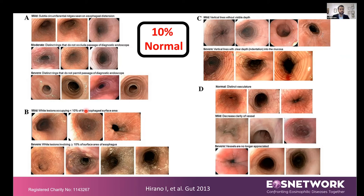The second set of changes we see in people with eosinophilic esophagitis are white plaques — small white dots. They can be mild in some cases, and in others you see more severe and more extensive involvement with these white plaques. That is the second group of features.